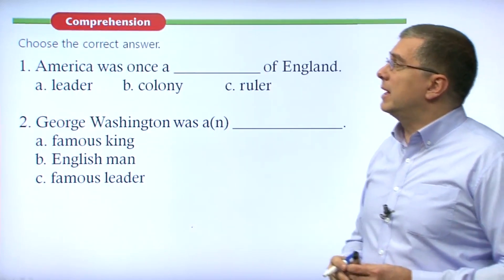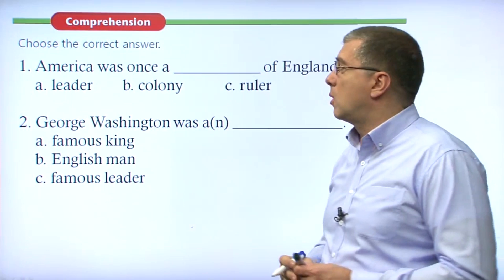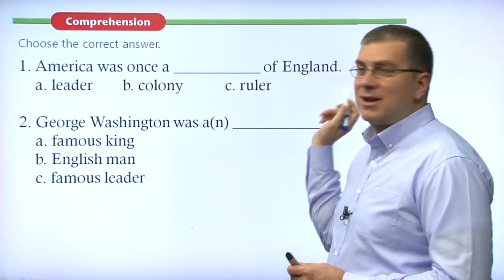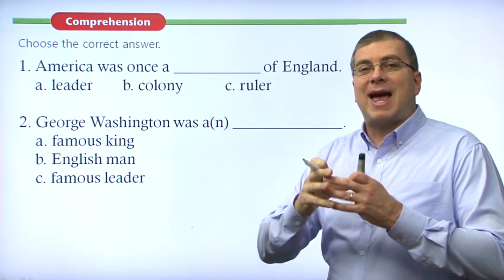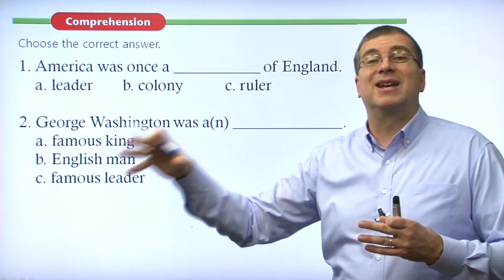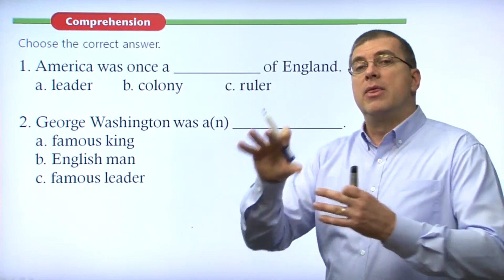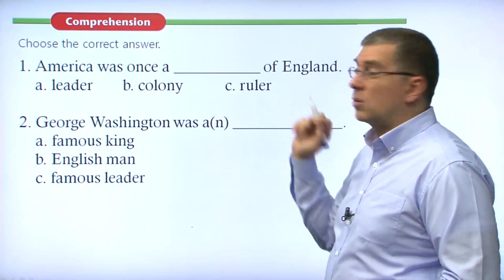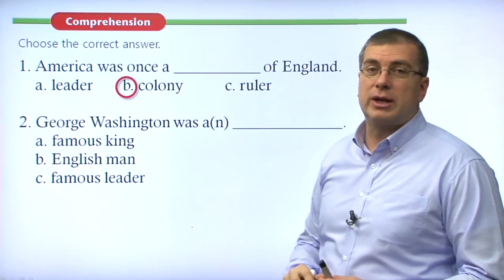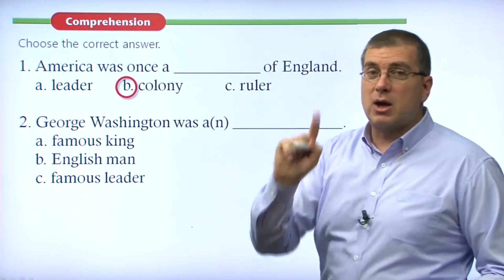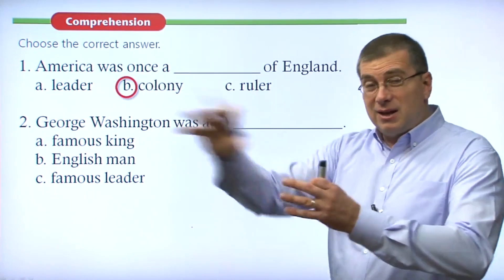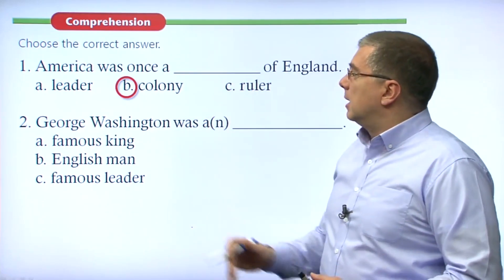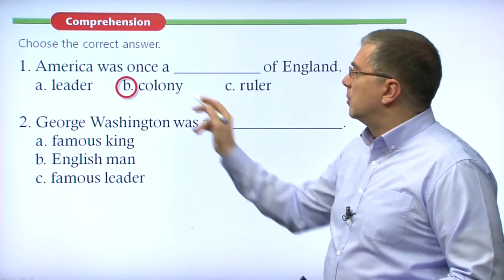Reading comprehension question one: 'America was once a blank of England.' England had many regions around the world that they controlled and ruled — those were called colonies. America was one colony of England. England had many colonies all around the world. So the answer is not 'leader' or 'ruler,' but 'colony.'